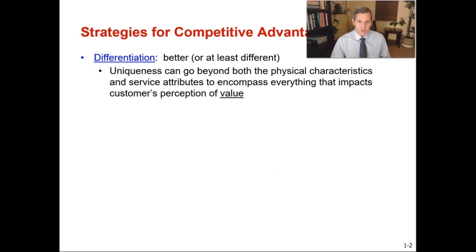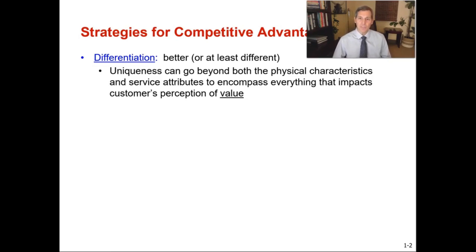Let's dive in on each strategy. The first is differentiation — making a product that's better, or at least different, really focusing on uniqueness. It can go beyond physical characteristics and service attributes to encompass everything that impacts the customer's perception of value. Having a high quality, unique product that's different than what competitors offer is the differentiation competitive strategy. When you have unique, high quality products, you can charge a premium. Organizations offering differentiated products generally fare well during downturns because of brand loyalty, consistent year-over-year revenue, and quicker rebounds.